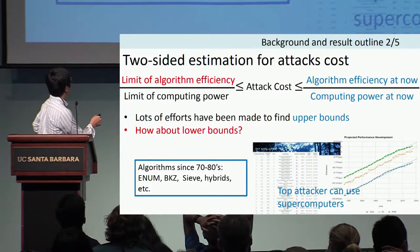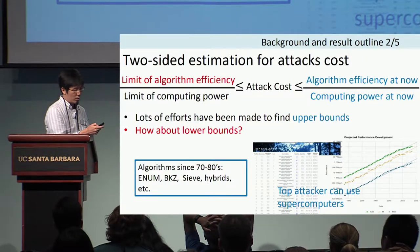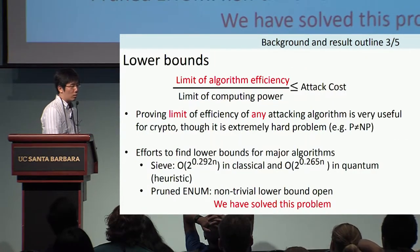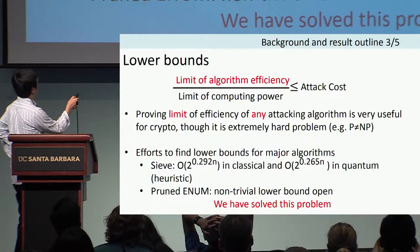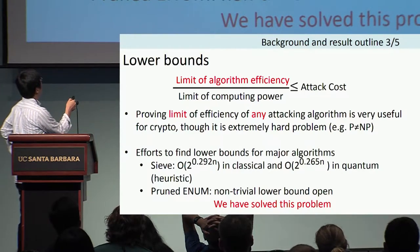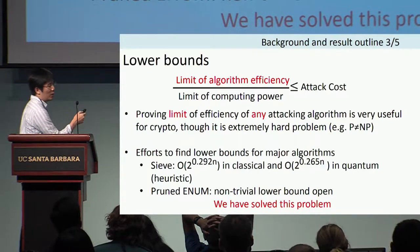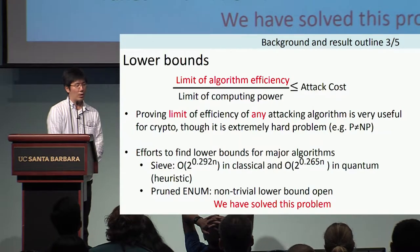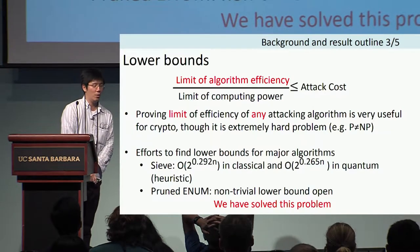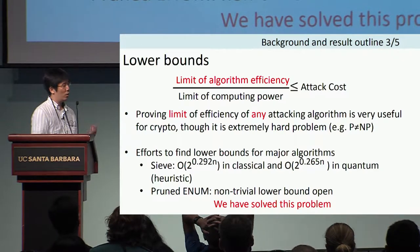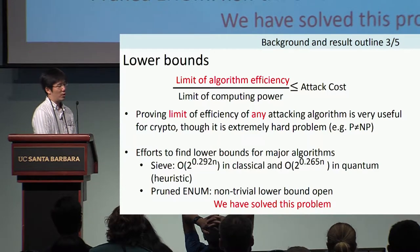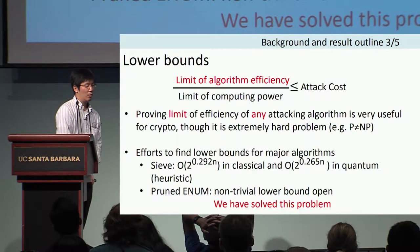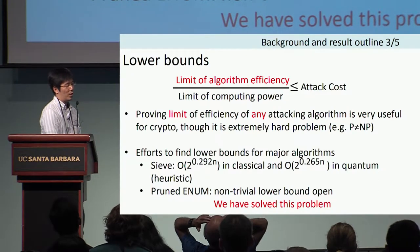So we consider the lower bound. The lower bound is roughly speaking the limitation of the algorithm's efficiency, and we consider the limit of any attacking algorithm's efficiency for a given problem. This is very useful, but also a very hard problem — probably similar to the P versus NP problem.